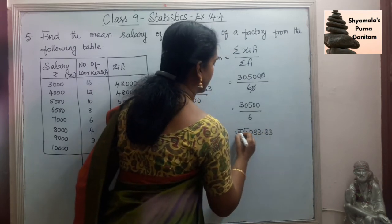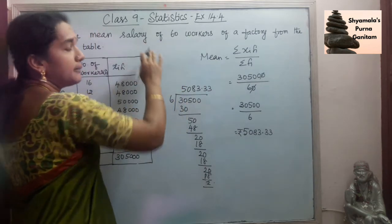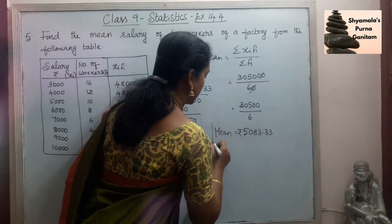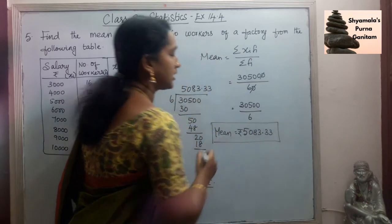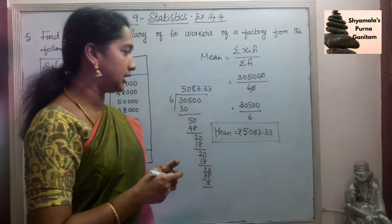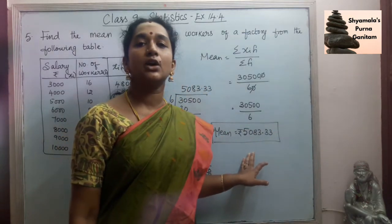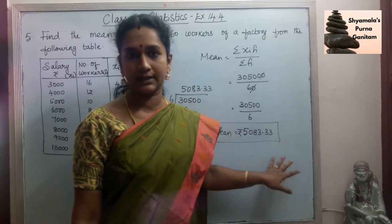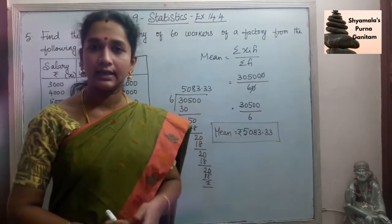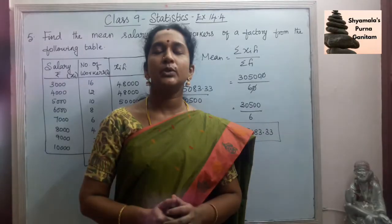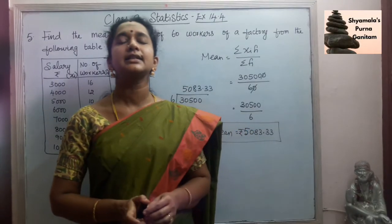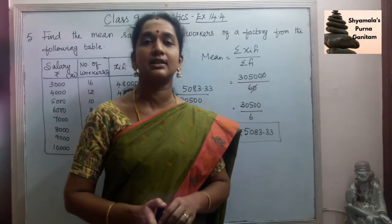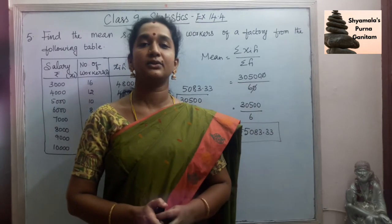So this is equal to 5083.33 rupees. We were asked to find the mean salary, so the mean salary of 60 workers is 5083 rupees 33 paise — that is 5083.33 rupees. With this I am completing today's class. The 14th chapter Statistics is now over. Thank you.